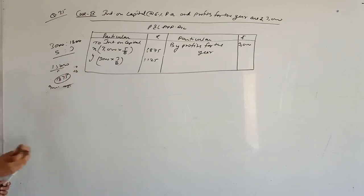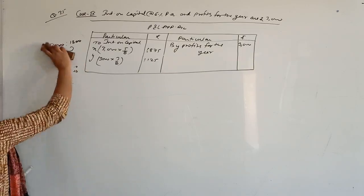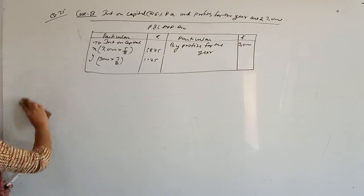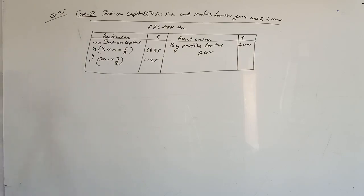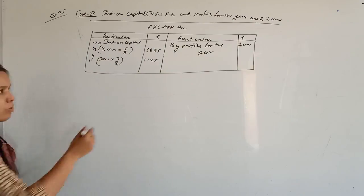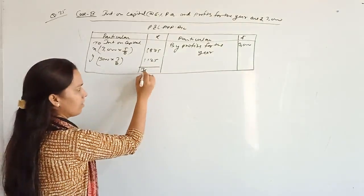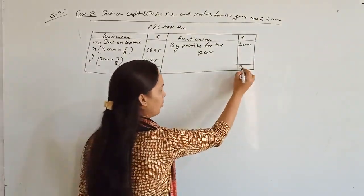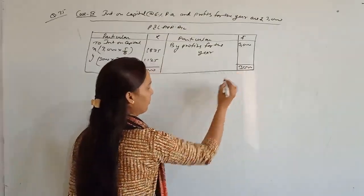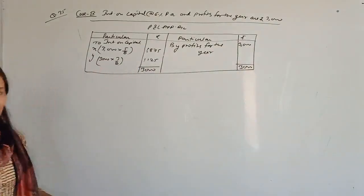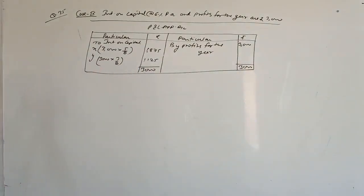This will be the interest on capital in this condition because profits are not sufficient. We distributed only 3,000 rupees in the ratio of interest on capital. The total comes to 3,000. That completes Case 4.